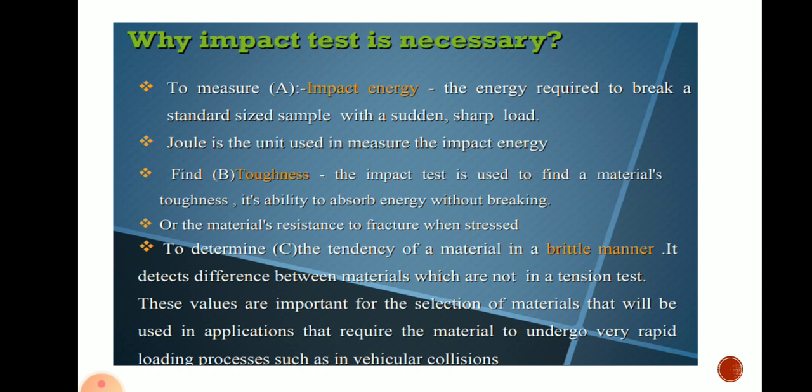Third, we can determine the tendency of a material to behave in a brittle manner — how a ductile material can behave under low temperature in a brittle manner. These values are important for the selection of material used in applications that require the material to undergo very rapid loading processes, such as vehicle collisions. So impact energy, toughness, and behavior at low temperature are the three things we find through impact testing.